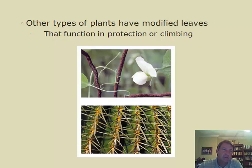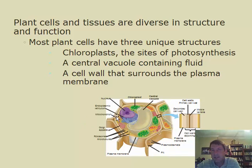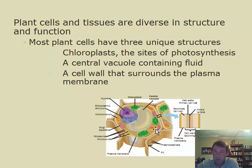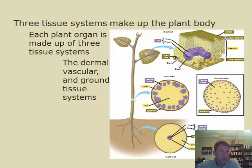Next we look at the different tissue types, just as we did with animal structures. We begin with a quick review of the plant cell. Like animal cells, plant cells have major organelles — nucleus, mitochondria, chloroplasts, Golgi apparatus, and so on. Some unique features of plant cells include the hard, rigid cell wall that gives the plant structure, and the chloroplast for photosynthesis.